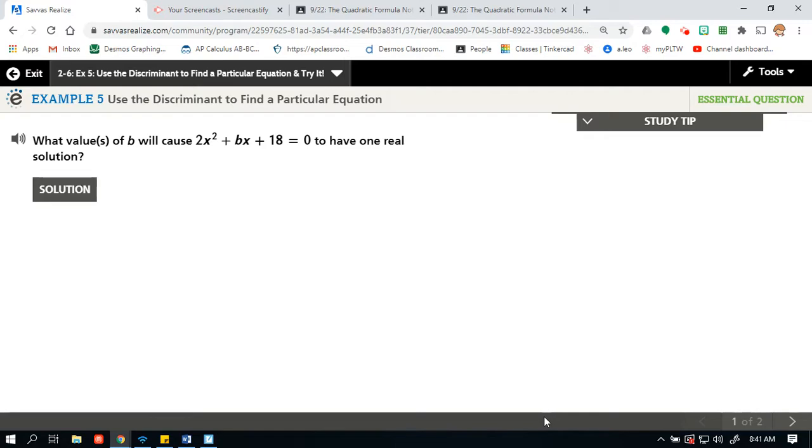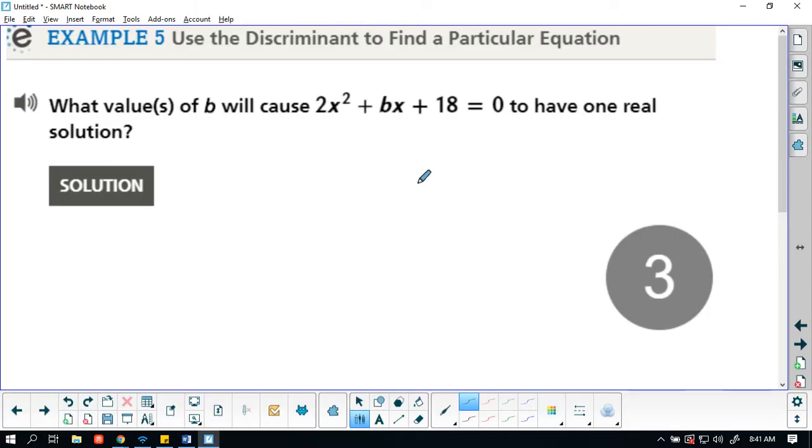Alright, so in this example, we're looking at what values of b will cause 2x squared plus bx plus 18 to equal 0, and we just want to look to see when it has one real number. So we're going to go back to the idea of the discriminant. And sorry, this 3 is here. I screen captured this when my video was counting down.